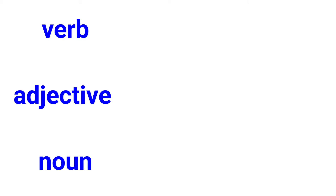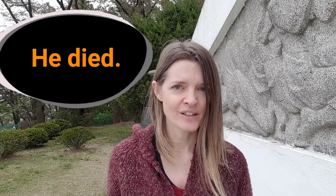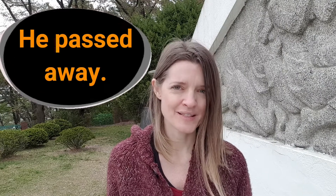I will tell you the correct way to say these things when you are discussing death. A very simple explanation is that 'to die' is the verb, 'dead' is the adjective, and 'death' is a noun. What you want to say is 'he died' or 'he passed away.' It's much more respectful and sensitive to say that someone passed away — that is the expression you should be using when referring to a person's passing.